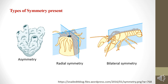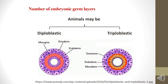Symmetry is the arrangement of body parts around a central plane or axis. The simplest body plan is seen in sponges (Porifera), which do not display symmetry and are asymmetrical. Symmetrical animals have paired body parts arranged on either side of a plane passing through the central axis. When any plane through the central axis divides an organism into two identical parts, it is called radial symmetry. Animals with two pairs of symmetrical sides are said to be bilaterally symmetrical.